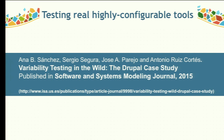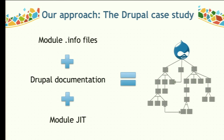With all this information, we performed a study to evaluate our proposal for testing techniques. The study is titled 'Variability Testing in the Wild: The Drupal Case Study,' published in the journal Software and System Modeling, which ranks ninth in the engineering software journals ranking in the world. I will summarize the work that inspired us to develop the Smart Test module.